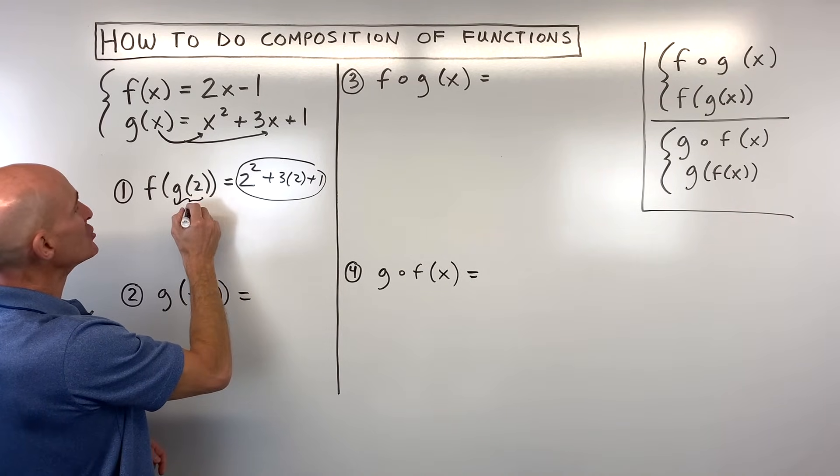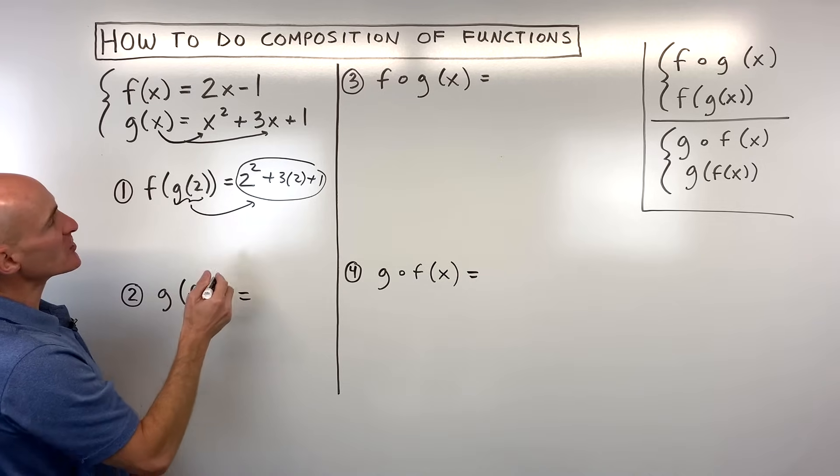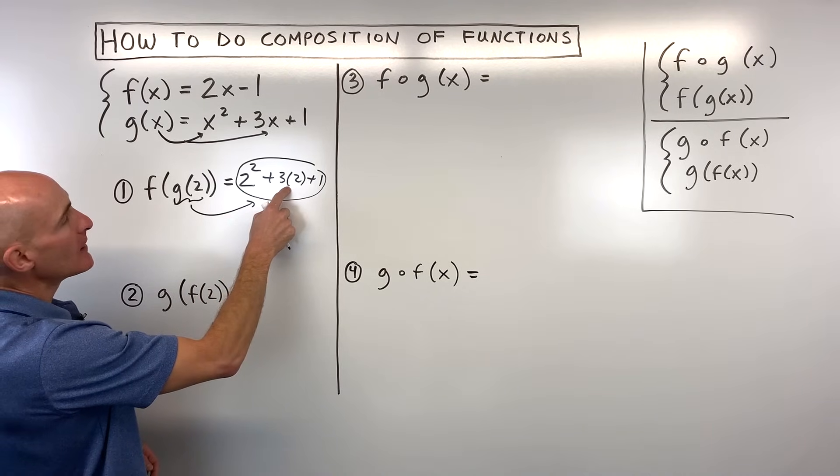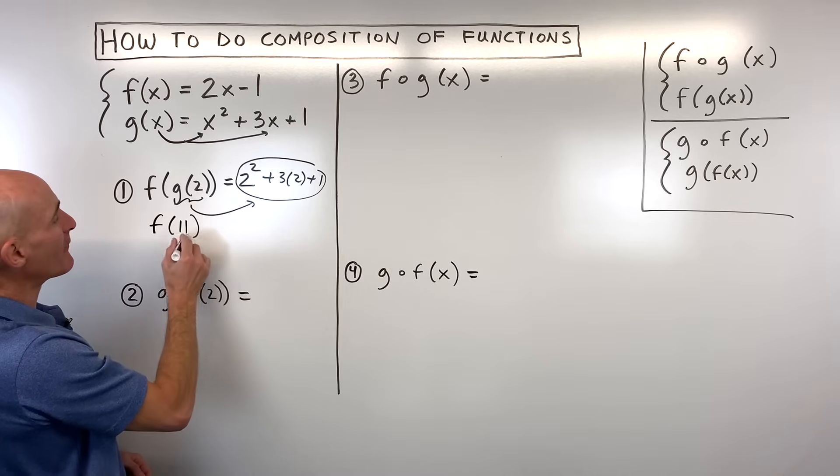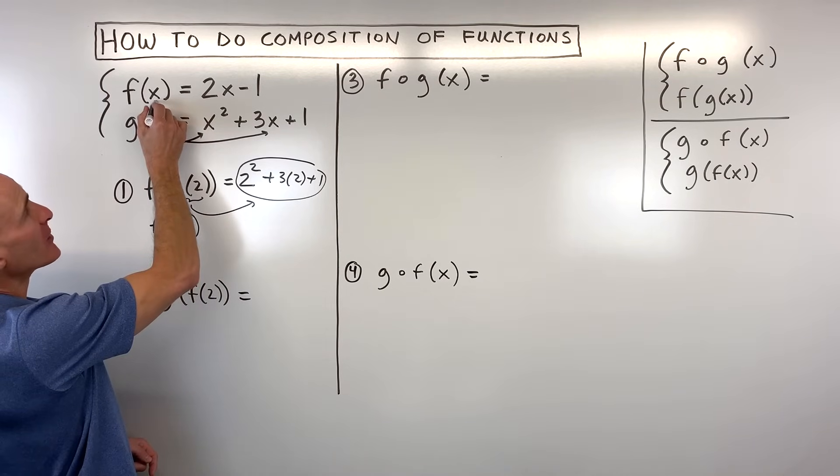So what we have here is we have 2 squared plus 3 times 2 plus 1. That's what this quantity g of 2 is equal to. So that's actually 4 plus 6 is 10 plus 1 is 11. So what we have now is what's f of 11.